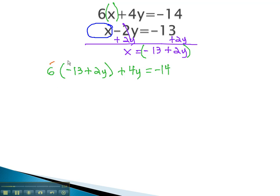We can solve by distributing, giving us negative 78 plus 12y plus 4y equals negative 14. Combining like terms, we get negative 78 plus 16y equals negative 14.